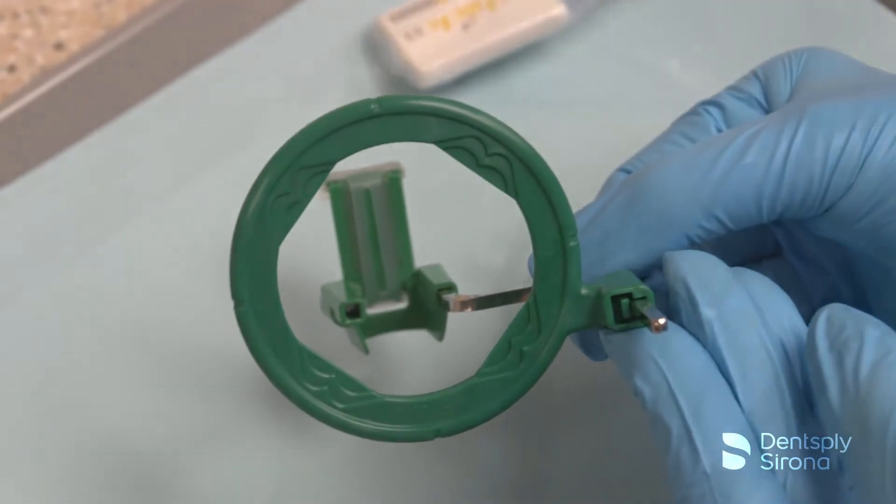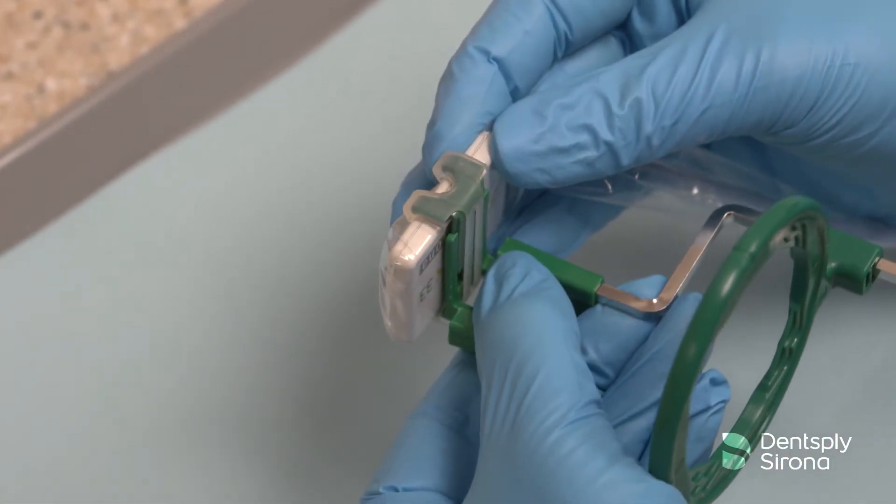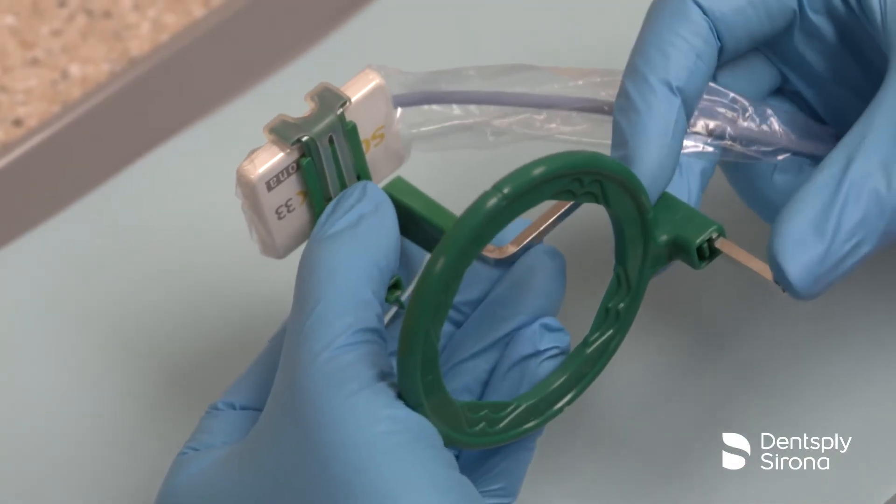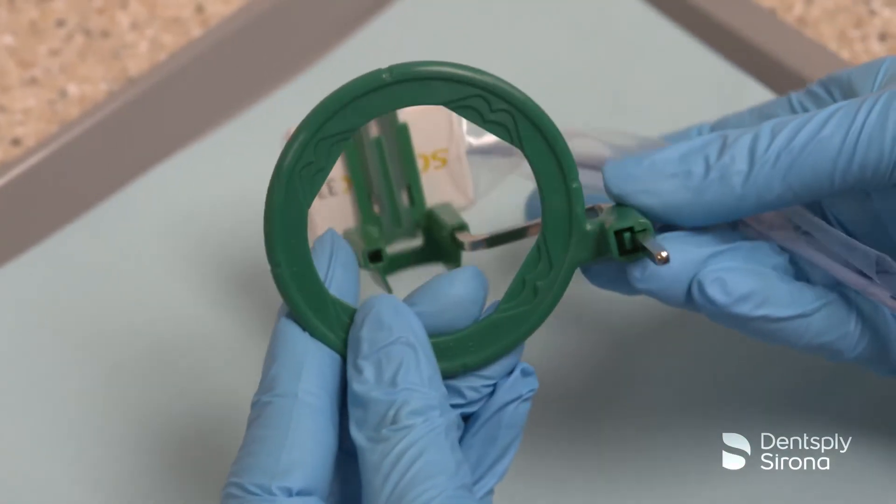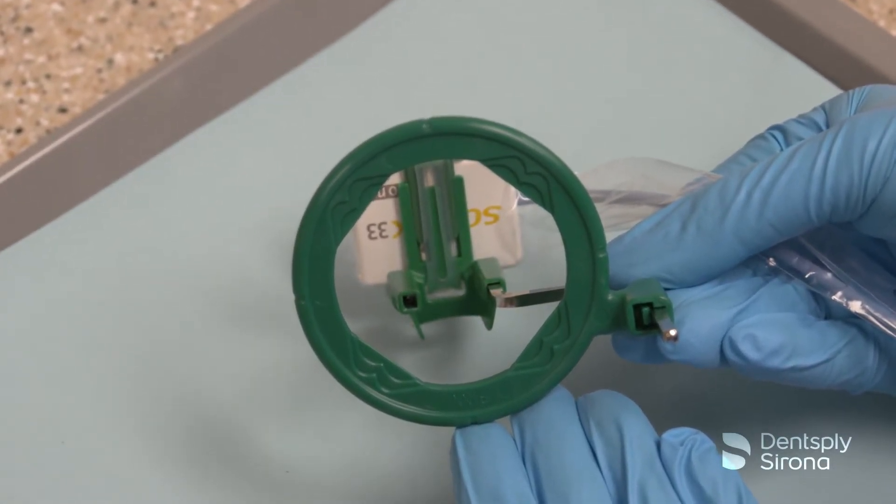After placing the sensor into a RIN digital sensor cover, securely insert the sensor horizontally into the green bite block, making sure the active side of the sensor is against the flat surface of the bite block. Ensure that the image receptor is visible through the green aiming ring.